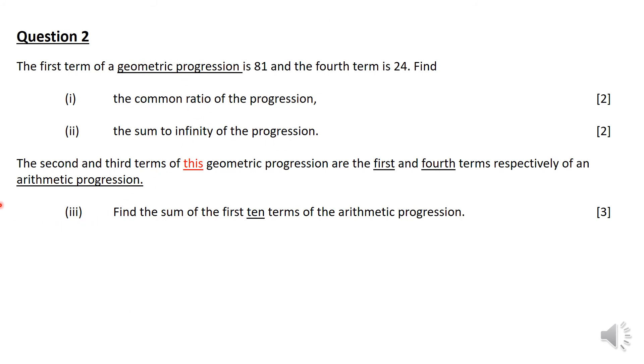The second question is the first term of a geometric progression is 81, the fourth term is 24. Roman 1, find the common ratio of the progression. Roman 2, the sum to infinity of the progression. These two are quite straightforward, especially the second part.